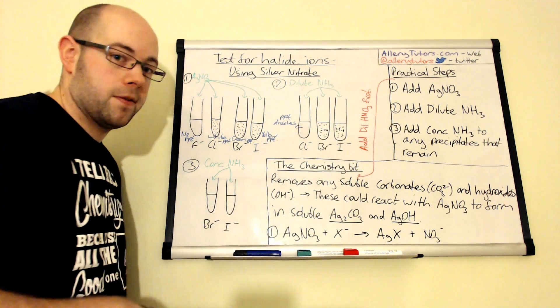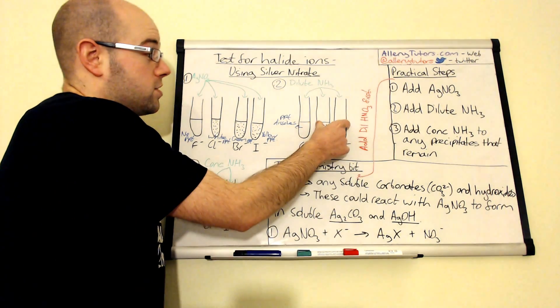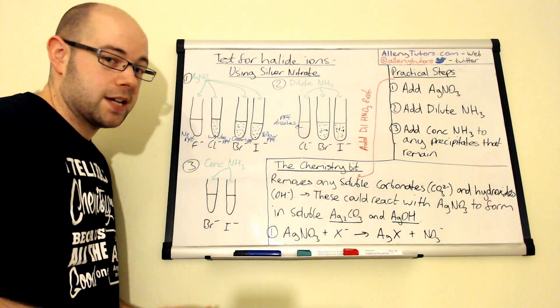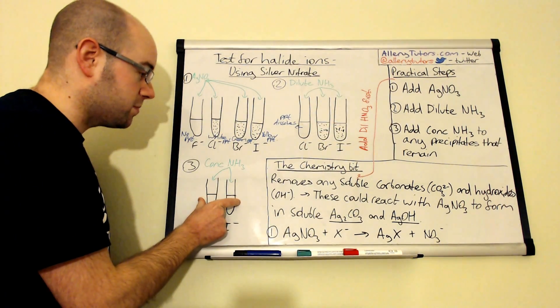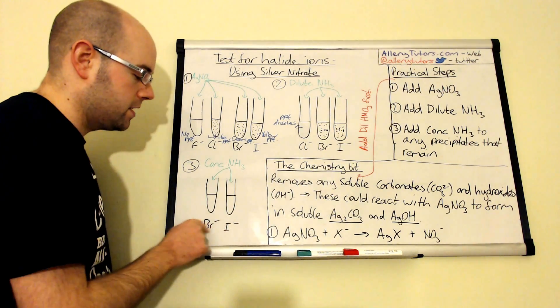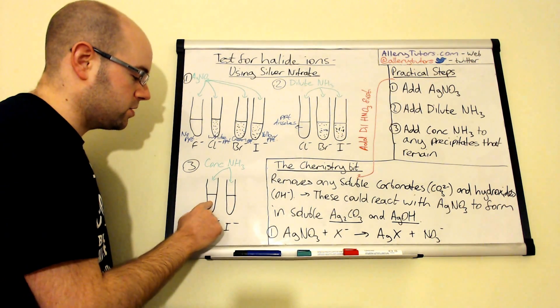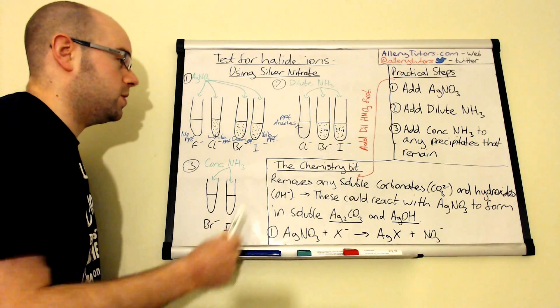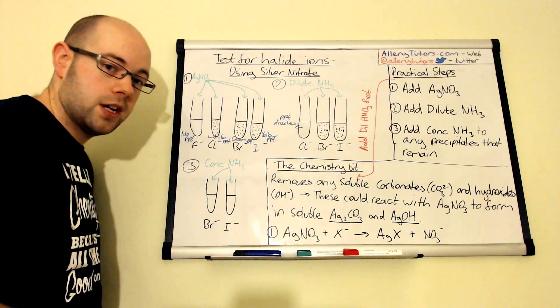We can take these two. How do we distinguish between these two? All we can do is do a further test. We can take these test tubes and have brought them down here. So the bromide and iodide have brought these down here. Remember, this is going to be cream and this one's going to be yellow. To distinguish between these two, we add concentrated ammonia.